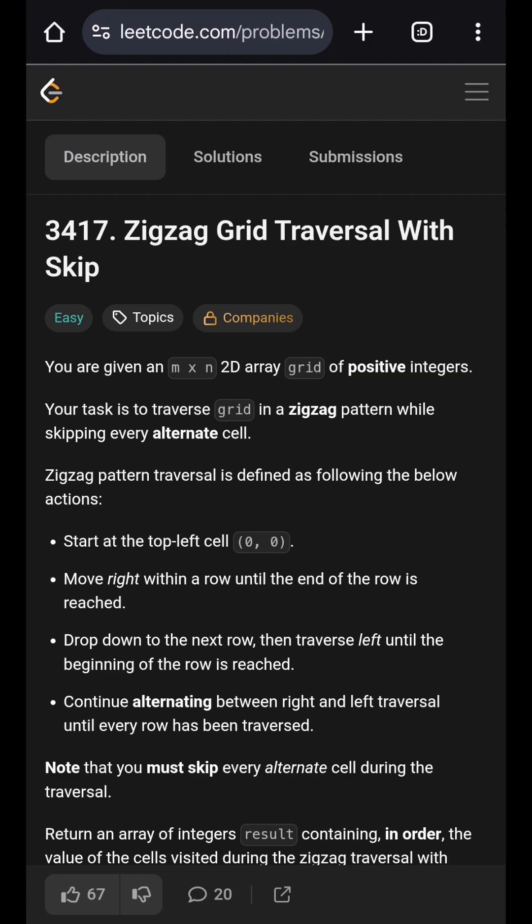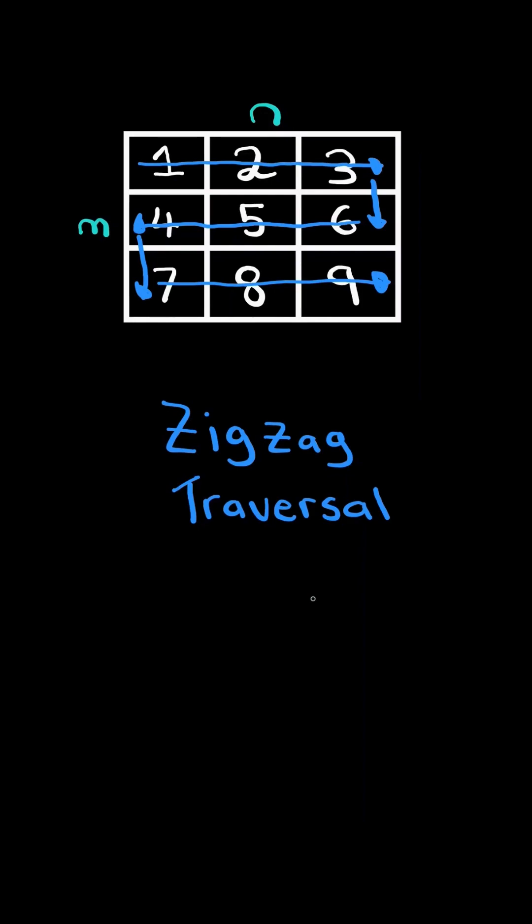Zigzag grid traversal with skip. Given an n by n 2D array of positive integers, start at the top left and move right until the end of the row, then move down, then move left until the beginning of the row, and finally keep alternating this process by moving down and then to the right. This will be the zigzag traversal.